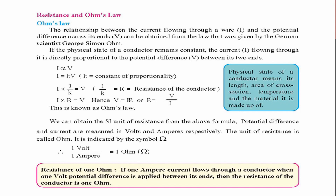The relationship between current, potential difference, and resistance is described by Ohm's Law: if the physical state of a conductor remains constant, the current flowing through it is directly proportional to the potential difference — I ∝ V. Converting the proportionality to equality using a constant k gives I = (1/k)V. This constant 1/k is the resistance R of the conductor. Therefore, V = IR, or equivalently IR = V.